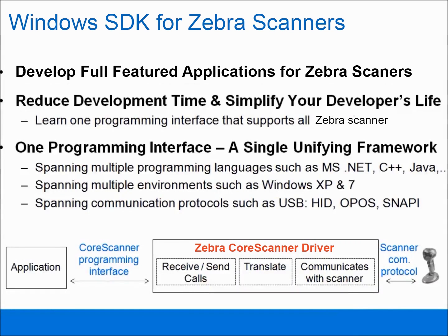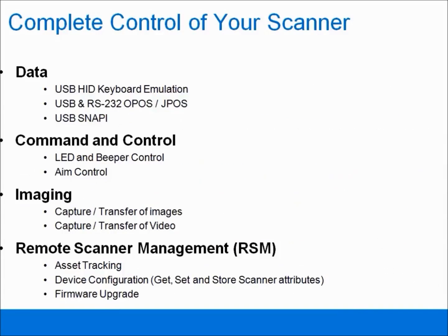The Windows SDK for Zebra Scanners is a free software development kit for the development of scanner applications on Windows XP and Windows 7 machines. We understand today's scanner applications need to do more than just handle barcode data. With the Scanner SDK you can easily create fully featured applications.